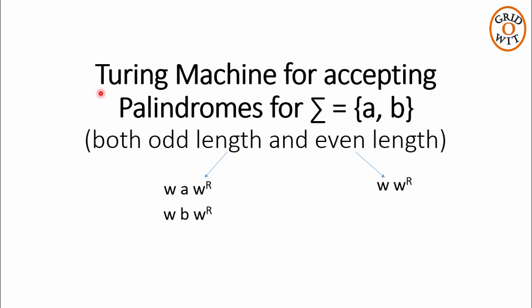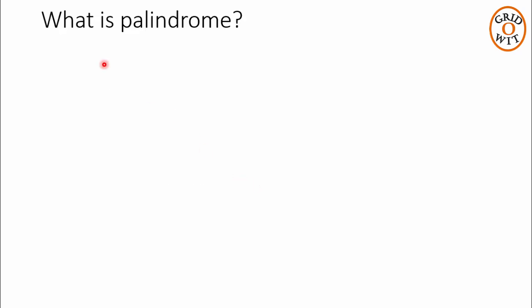Hello everyone. In this lecture, we will discuss how to design a Turing machine to accept all the strings which are palindromes over the alphabet sigma is equal to {a, b}. First, we will see what palindromes are.